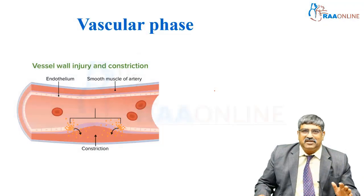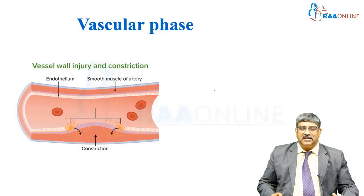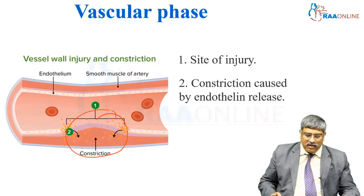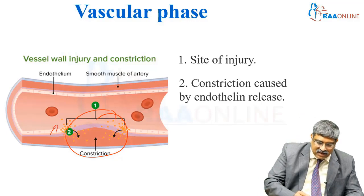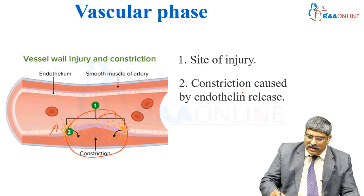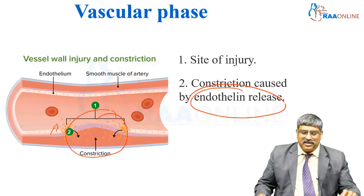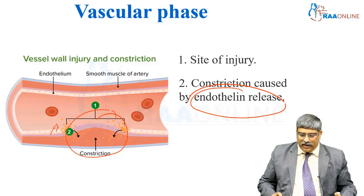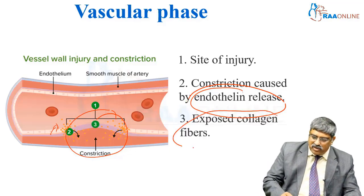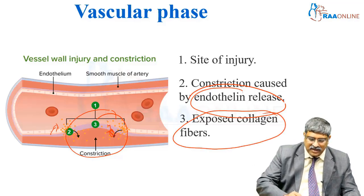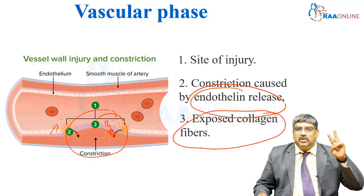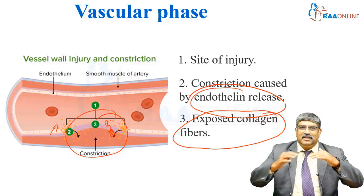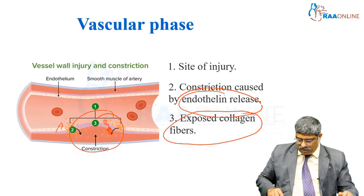Coming to the first phase, which is the vascular phase — here there is an injury to the vessel wall. The endothelial cells will release endothelin and cause local vasoconstriction, which will try to reduce the bleeding. Another important thing is exposed collagen fibers, which get exposed here. These two things happen in the vascular phase: localized vasoconstriction by endothelin, and exposed collagen fibers.